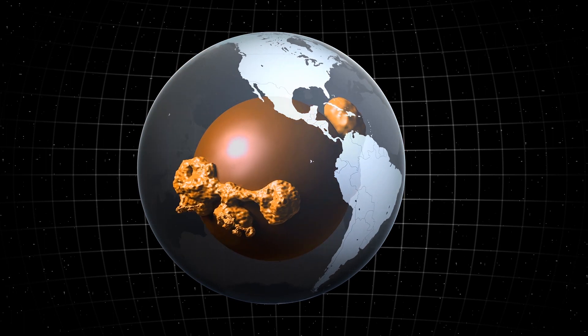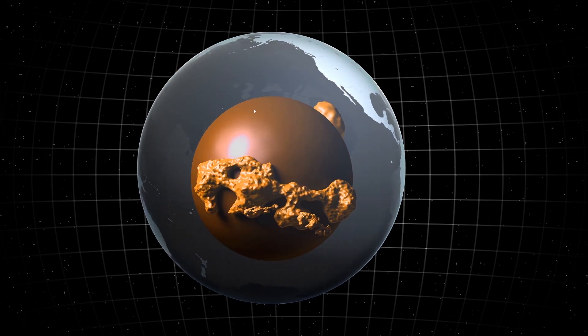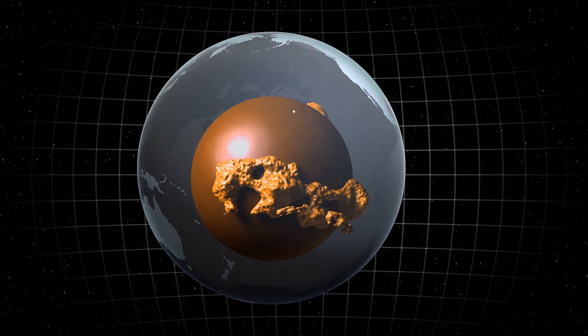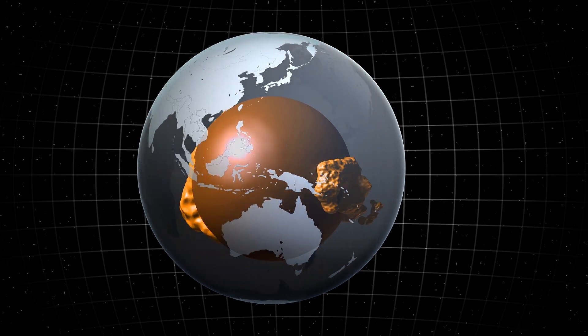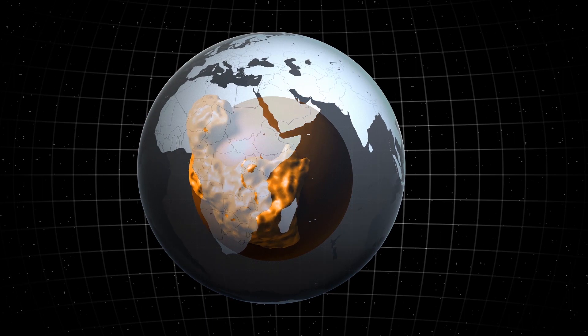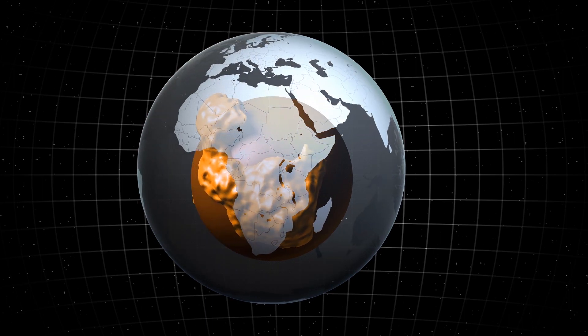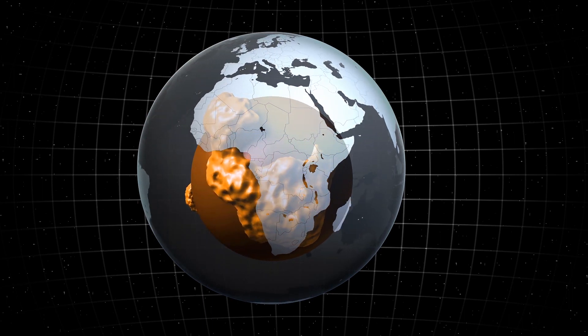According to the ESA, it is not clear what is causing the weakening of the South Atlantic Anomaly, but it could be related to the African Large Low Shear Velocity Province, one of two giant underground masses of rock that float like hidden continents where the Earth's mantle meets the outer core.